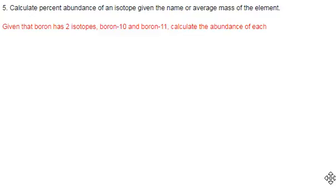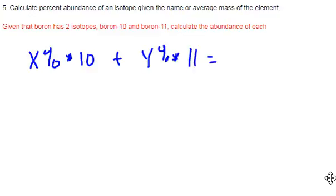Boron has two isotopes, boron-10 and boron-11. That means I must have X percent of boron-10 and Y percent of boron-11, and together these have to equal the average atomic mass which I find on the periodic table to be 10.81 AMU.